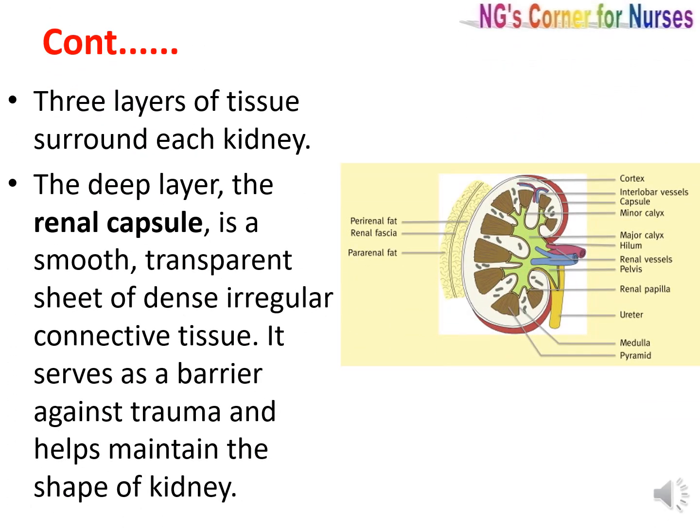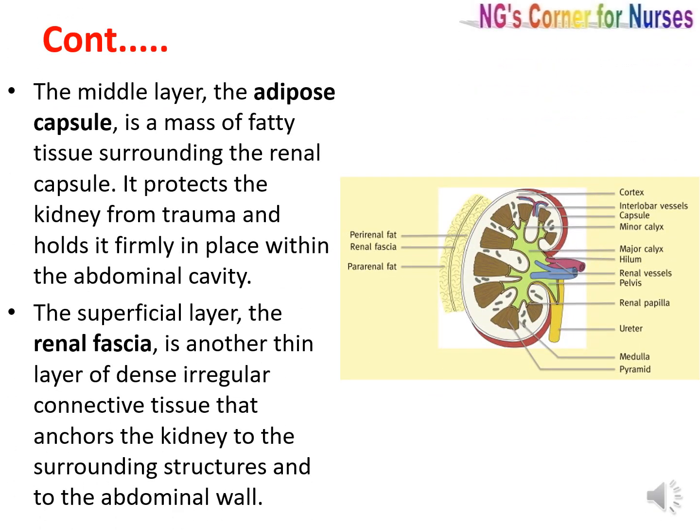Each kidney is surrounded by three layers of tissue. The deep layer is known as the renal capsule — a smooth, transparent sheet of dense irregular connective tissue that serves as a barrier against trauma and helps maintain the shape of the kidney. The middle layer is known as the adipose capsule, a mass of fatty tissue surrounding the renal capsule that protects the kidney from trauma and holds it firmly in place. The superficial layer is the renal fascia, another thin layer of dense irregular connective tissue that anchors the kidney to surrounding structures and to the abdominal wall.